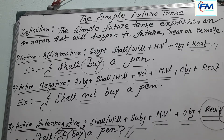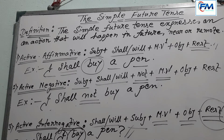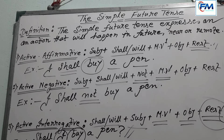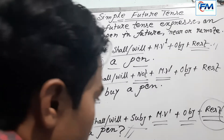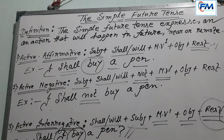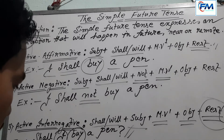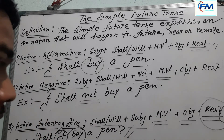So these are the four kinds of rules: active affirmative, active negative, active interrogative, and active interrogative negative. Here I have given some uses of the simple future tense. When the sentence expresses a promise or an instant decision, then you must use this tense — the simple future tense.